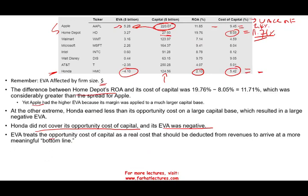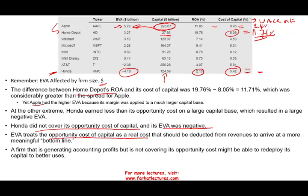EVA treats opportunity cost of capital as a real cost that should be deducted from revenue to arrive at a more meaningful bottom line. From an economic perspective, a firm generating accounting profit but not covering its opportunity cost might be able to redeploy its capital to better use. Honda, for example, would need to look at their assets and see if they can redeploy them to earn a higher rate of return than their cost of capital.